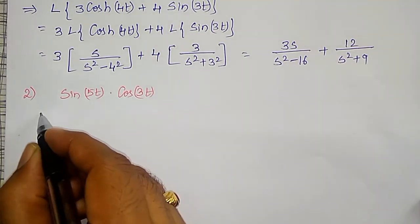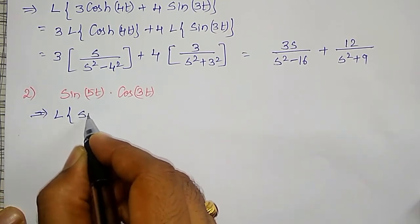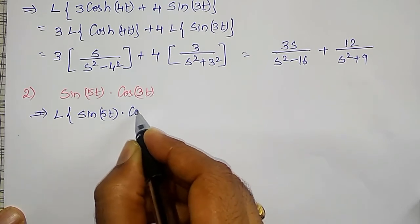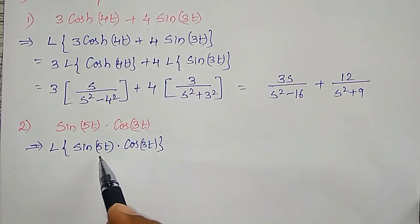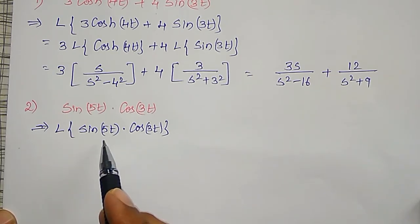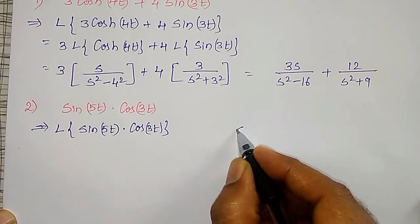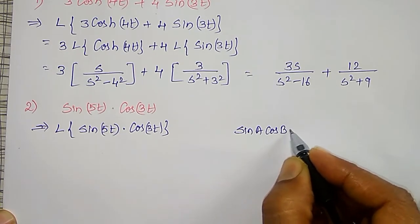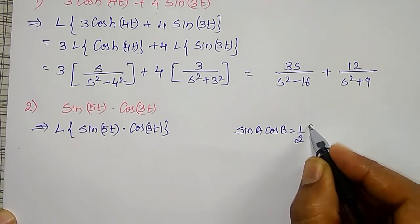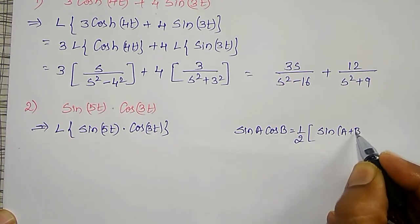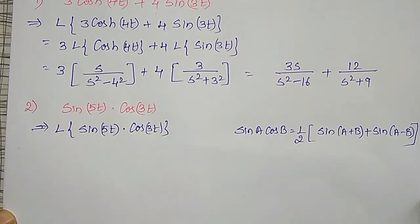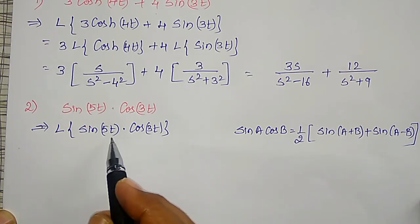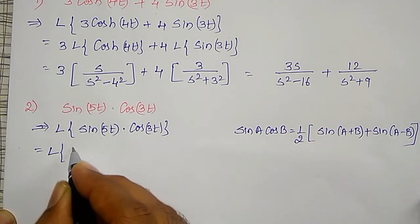Next example: the Laplace transform of sin(5t) times cos(3t). Here a product of two trigonometric functions is present, so I cannot find it directly. I need to convert the product to a sum using the identity: sin(A)·cos(B) equals 1/2 times [sin(A+B) plus sin(A-B)].